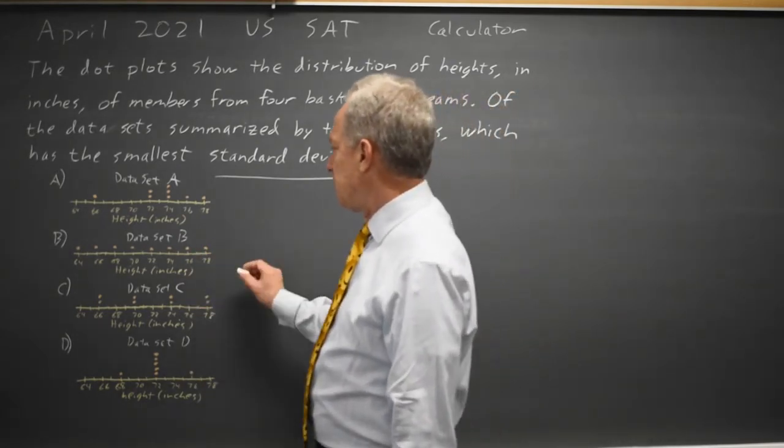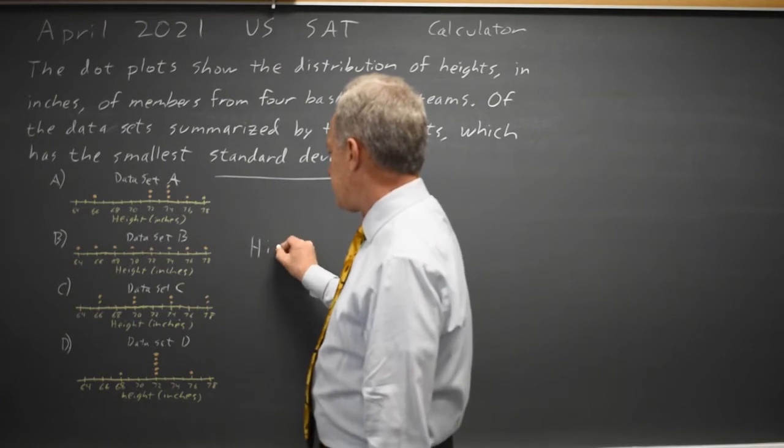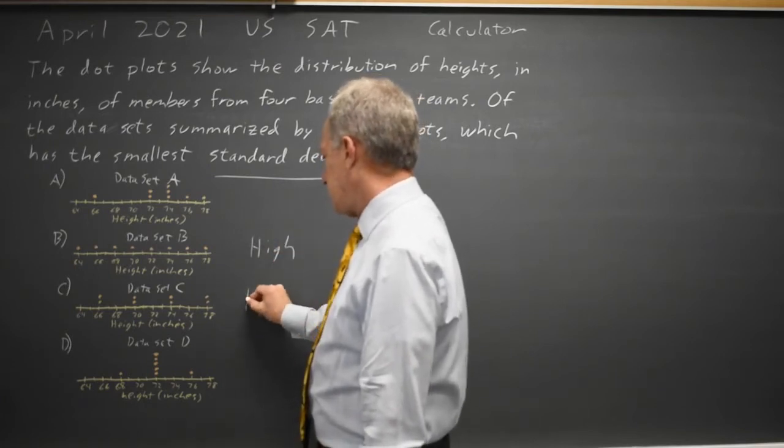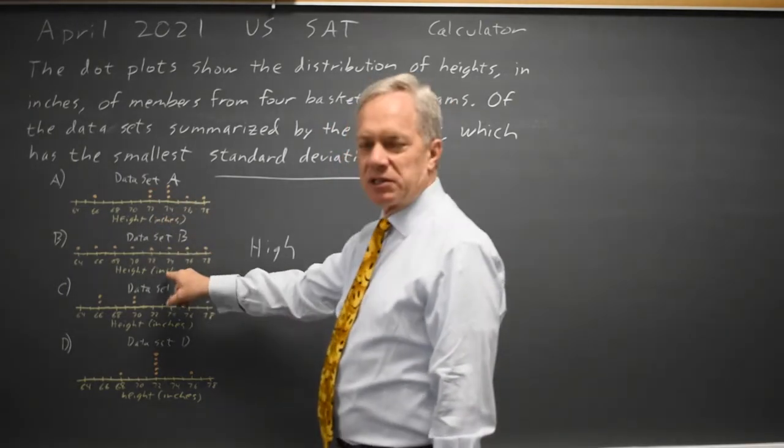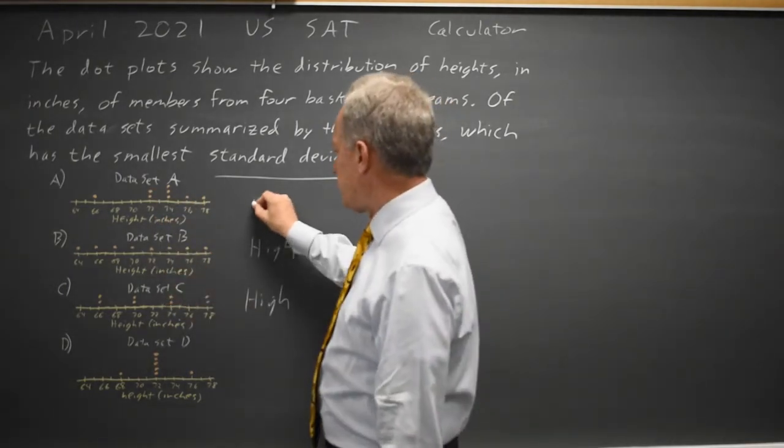So, data sets B and C would have a high standard deviation. Data set A would have a lower standard deviation than those, perhaps medium.